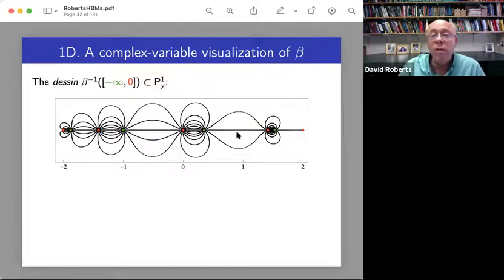So I've picked sort of negative infinity to zero. That's an interval in the downstairs line. And I'm pulling it back upstairs. Our map has degree 64. And so you get 64 edges. So here are three of them.